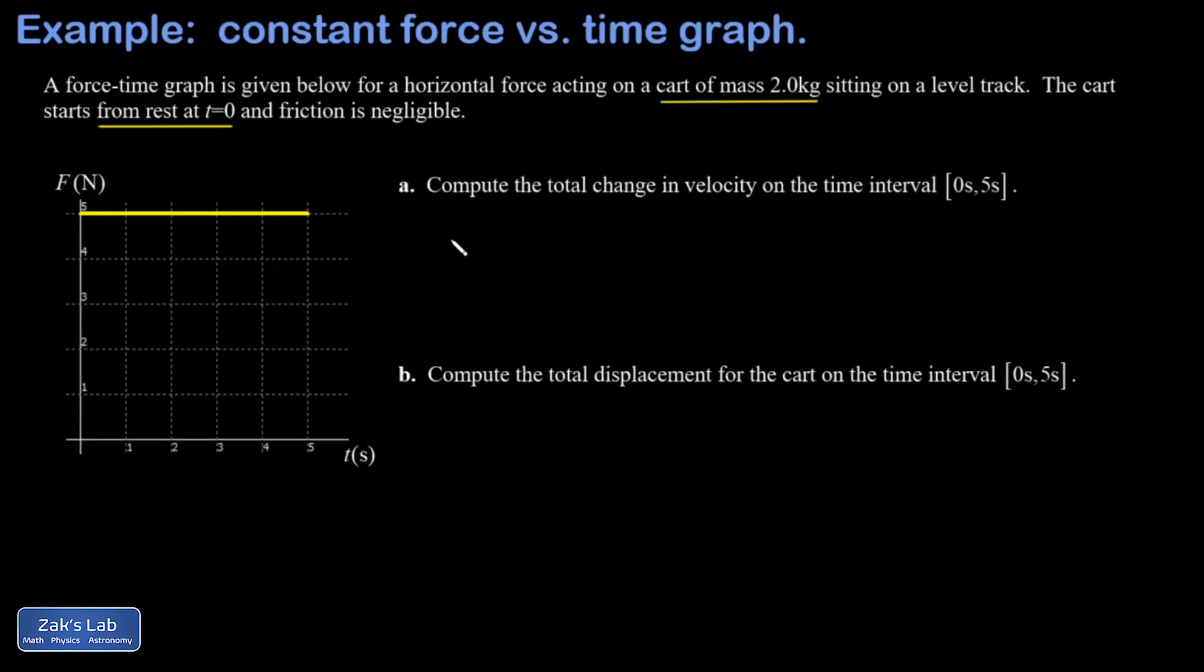The key to this is to use Newton's second law. I'll write it as a equals F over m in order to find the acceleration of this cart. That's five newtons over a mass of 2.0 kilograms, so I get an acceleration of 2.5 meters per second squared.